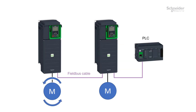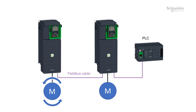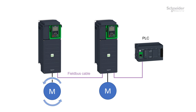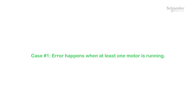First, it's very important to check when the error is triggered. Case number one: at least one motor is running in your application. Case number two: the error happens even if all motors are stopped. Case number one — the error happens when at least one motor is running.